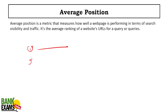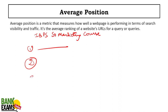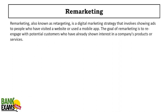Average position on Google: when you make a Google search, for example 'IBPS SO Marketing course,' there are websites ranking in the top 10 positions. That ranking position is your average position on Google.